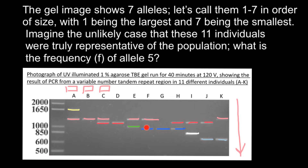If we count the bands we get 1, 2, 3, 4, 5, 6, 7, 8, 9, 10, 11, 12, 13, 14, 15, 16, 17, 18, 19. If your answer is that we have three alleles of type five divided by 19 total, this is going to be a wrong answer.